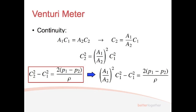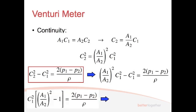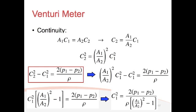So we've got this equation. We can take C₁² out of the left-hand side of the equation. So we've got C₁² multiplied by the ratio of area squared minus 1 equals 2 times the pressure difference over the density. And obviously, we can move this quantity, the ratio of area squared minus 1, to the other side. And so you divide both sides by that and you end up with this equation.